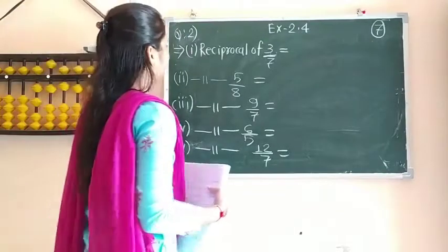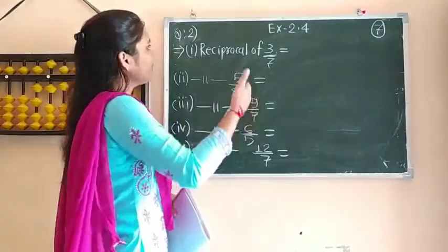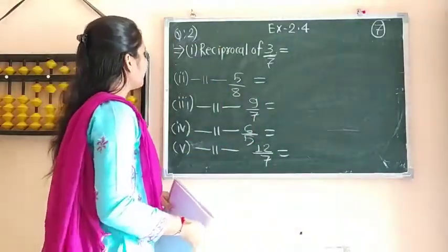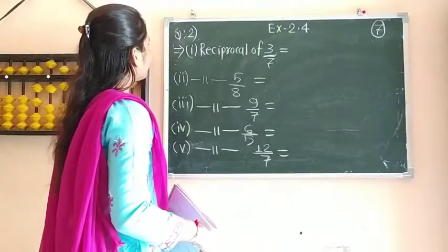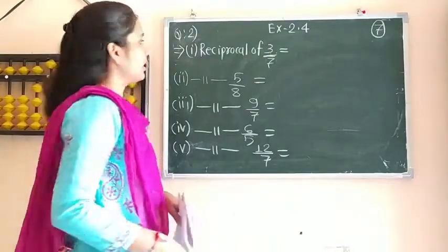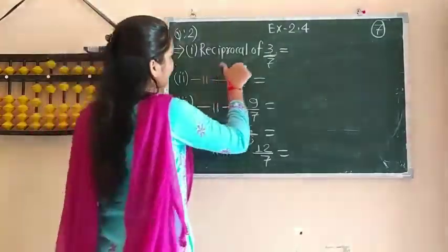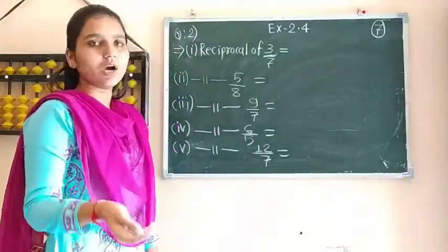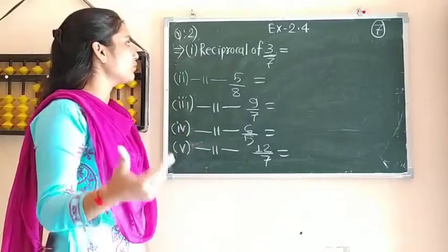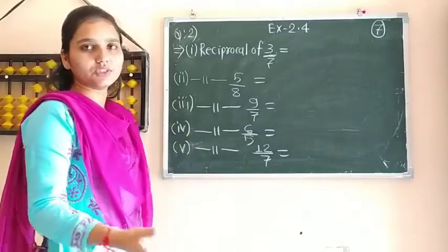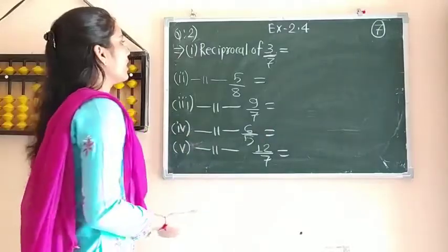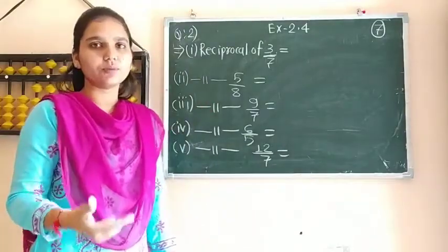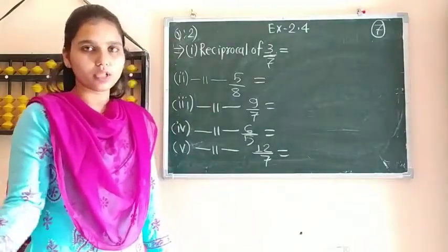Today we are going to continue exercise 2.4, question number 2. The first question we have completed before. In this question, you have to find the reciprocal of the given fraction and also write down which type of fraction it is — whether it is a proper fraction, improper fraction, mixed fraction, or a whole number.